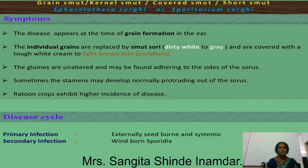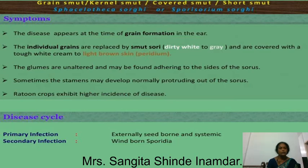Due to severe infestation, these sori get converted into black colored powder. When the sori burst, the black colored powder is dispersed everywhere. When the temperature and atmospheric conditions are suitable, these spores start germination and again infect the next year.